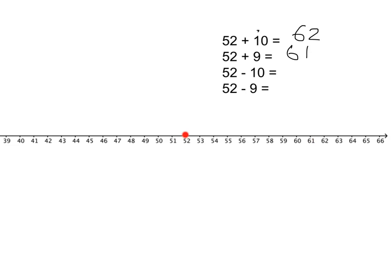52 minus 10. You take a straight jump back of 10 which gives you to 42. And so what happens when you've got 52 minus 9? Well you go take your jump back of 10 but you've jumped back one too many so you must come forward to 43.